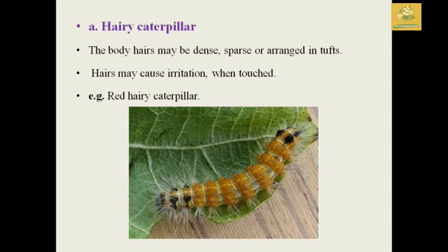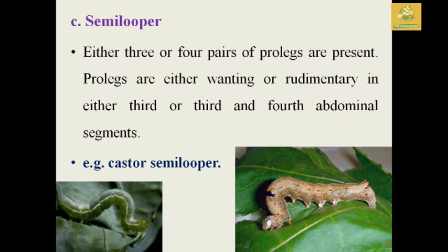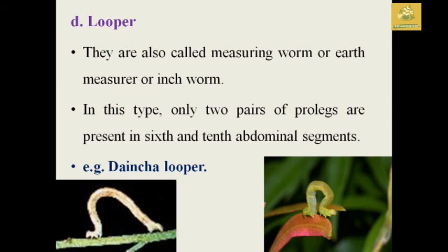In hairy caterpillars, they have dense arrangements of tough hairs on the body, which may cause irritation when they touch the human body. In slug caterpillars, the larva is thick, stout, and fleshy; the larval head is small and retracted, thoracic legs are minute, and terminal legs are absent — for example, the cast slug caterpillar. These are also known as platiform larvae. In semi-loopers, three to four pairs of prolegs are present, and the prolegs may be either wanting or rudimentary on the third and fourth segment — for example, the castor semi-looper.